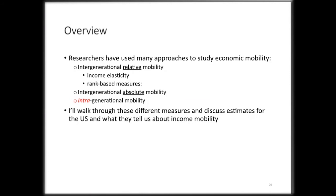What I'm going to do is talk about a few different measures, touching on some ideas already discussed by Catherine and Michael. I'm going to talk about some measures of intergenerational relative mobility. I'll talk about one very commonly used measure that hasn't really yet been talked about, which is the intergenerational income elasticity. I'll also talk about some rank-based measures popularized by the work of Raj Chetty and Nathan Hendren.